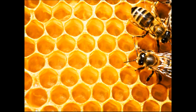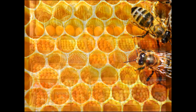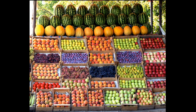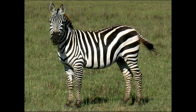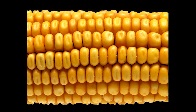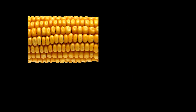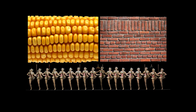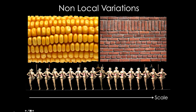Our visual world is full of repetitions. However, in reality, the repetitions are never perfect, and there are various variations between repeating structures at different scales.